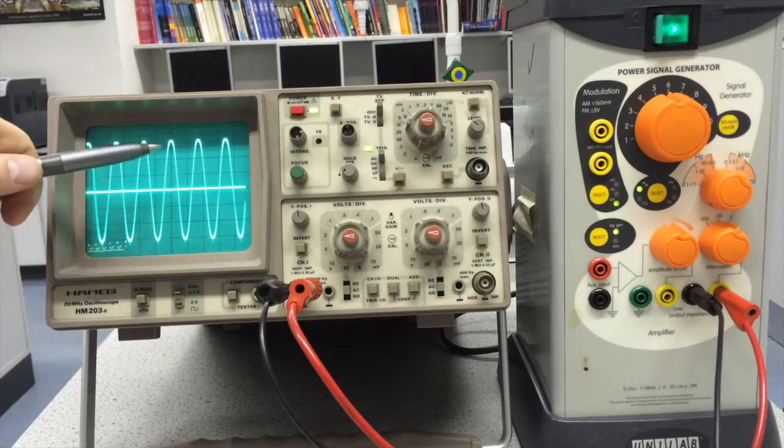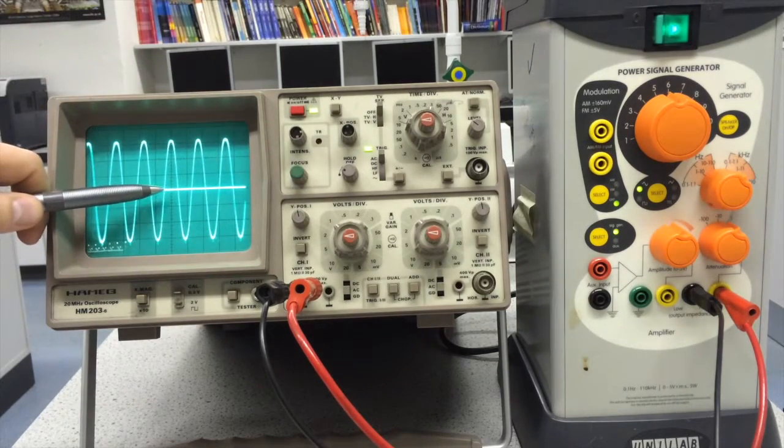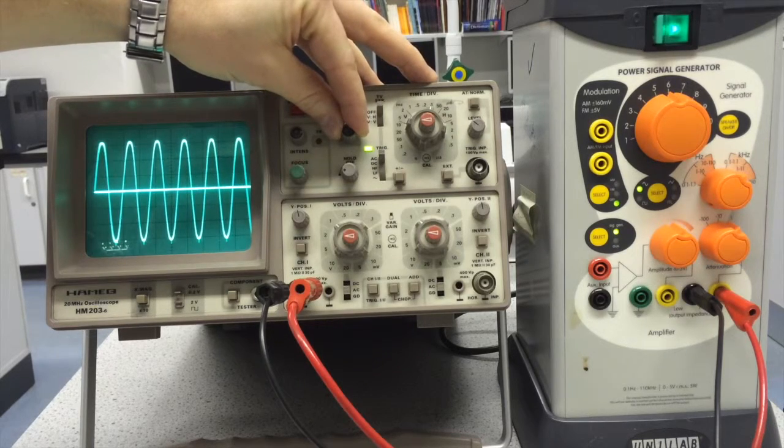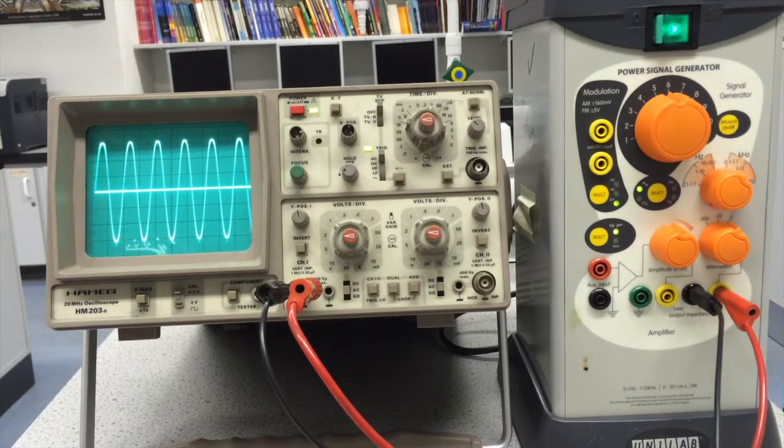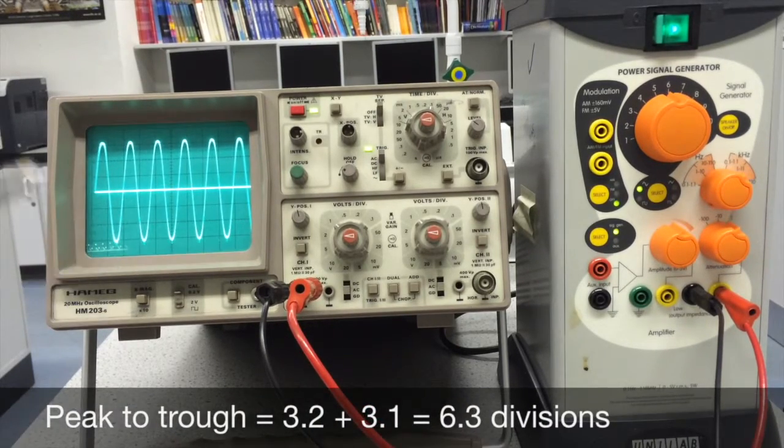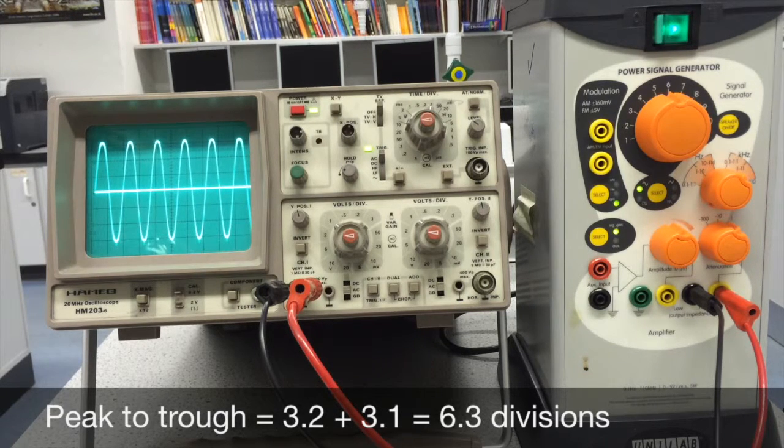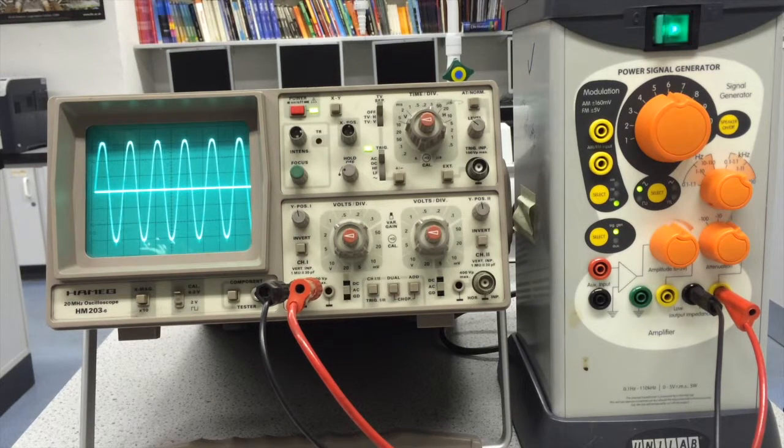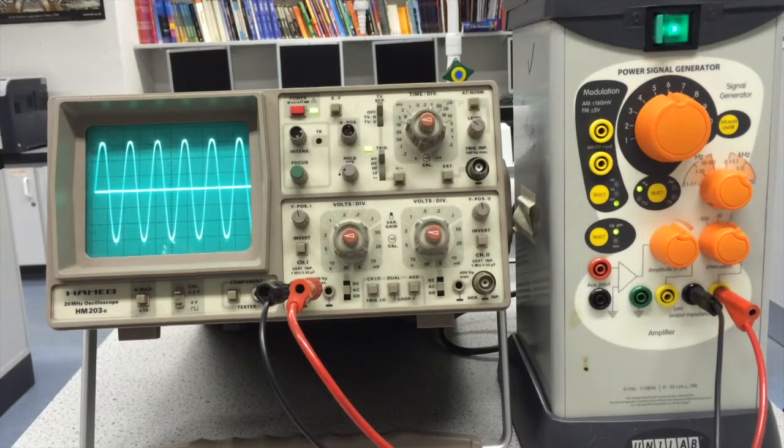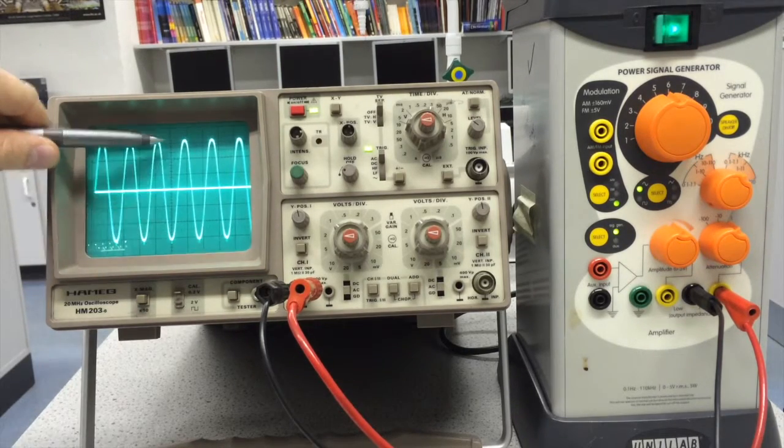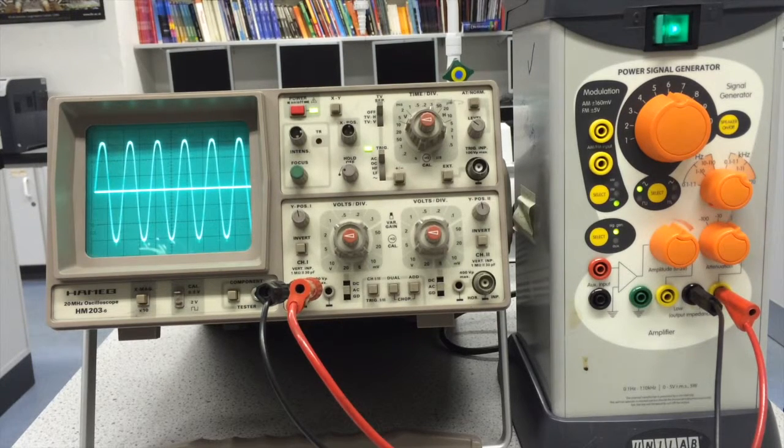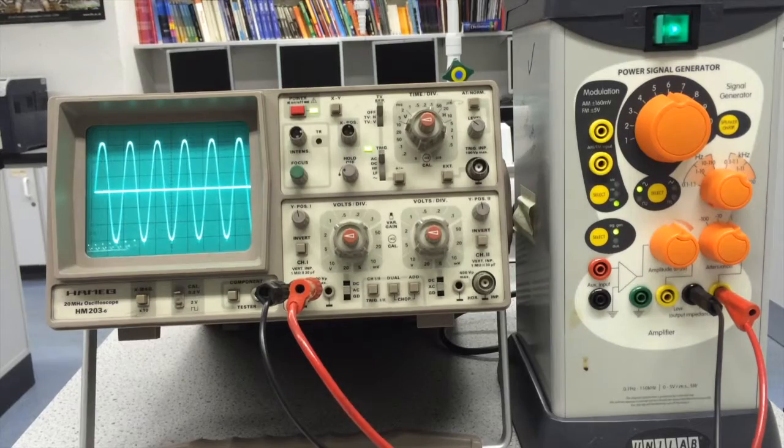Now you could just do the 3.2 multiplied by the Y-gain setting. I'm going to just check how many divisions the trough is below and I would say that's 3.1, so not perfectly aligned but 3.2 plus 3.1 gives me the peak to trough number of divisions. If I then multiply that by the Y-gain setting which is one volt per division, so that's pretty easy, that's 6.3. I now need to divide that by two to find the peak voltage. The peak voltage is from the equilibrium to the peak so 6.3 divided by two is 3.15 volts.